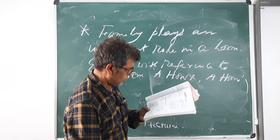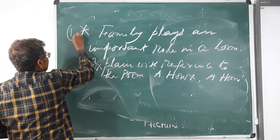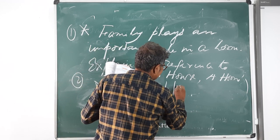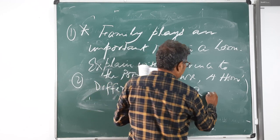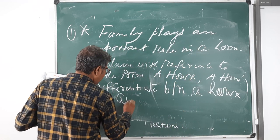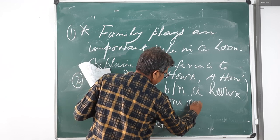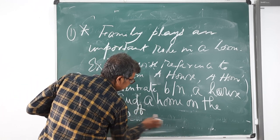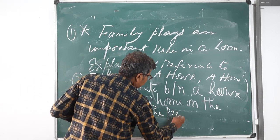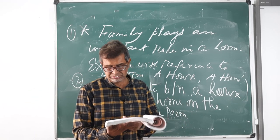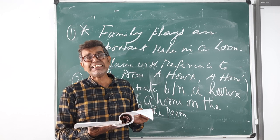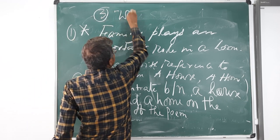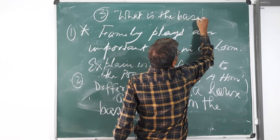Differentiate between a house and home on the basis of the poem. Second question. Differentiate between a house and a home. On the basis of the poem. These two questions very very important for you. Now last question. What is the basic idea of the poet? Last question. What is the basic idea of the poet?